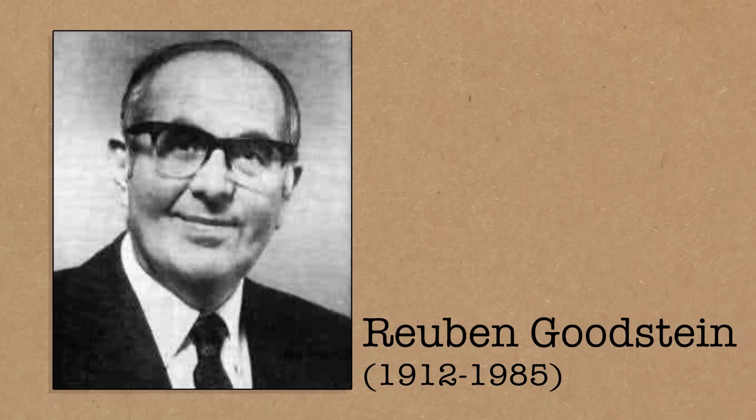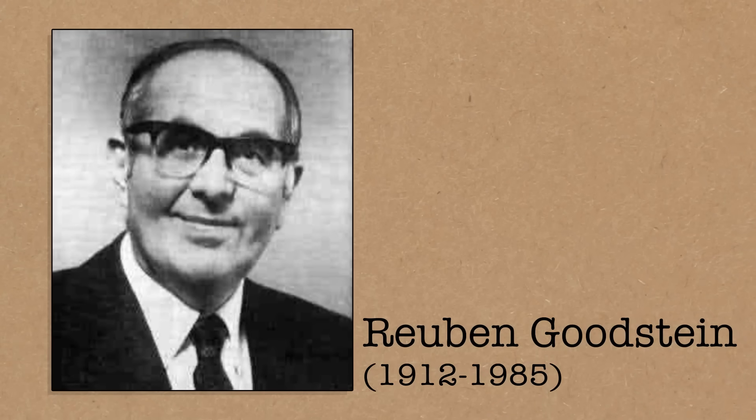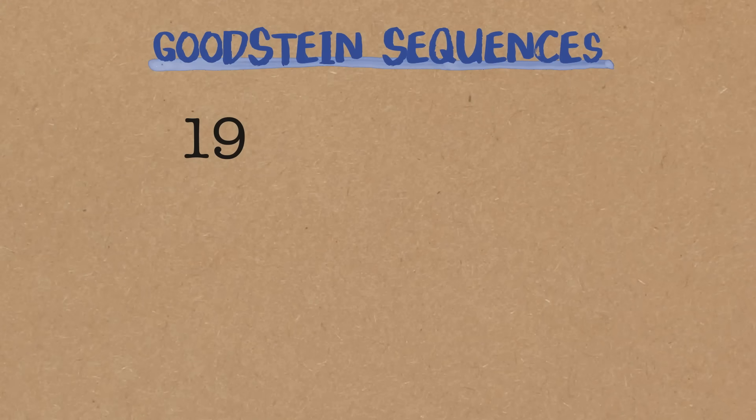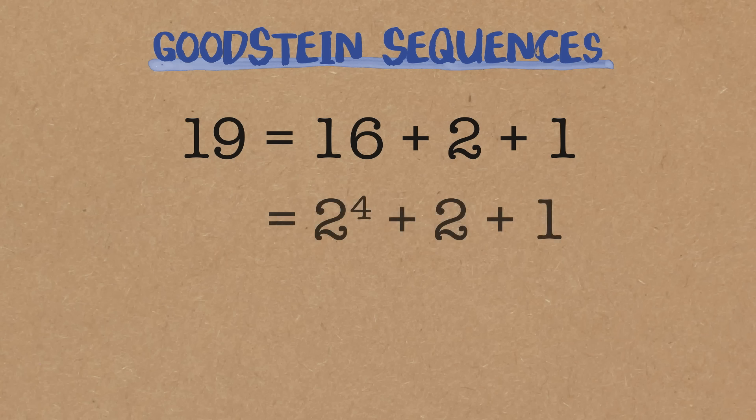I'd like to talk you through an unprovable theorem. This is a really interesting bit of maths that a guy called Ruben Goodstein did in 1944. So it starts with just any number, so I'm going to pick 19. And then to set things up, what we need to do is break it into powers of 2, so 16 plus 2 plus 1. So just making that explicit, 16 is 2 to the power of 4.